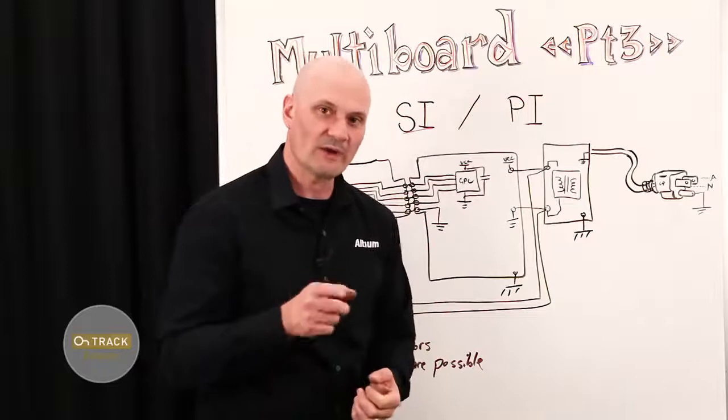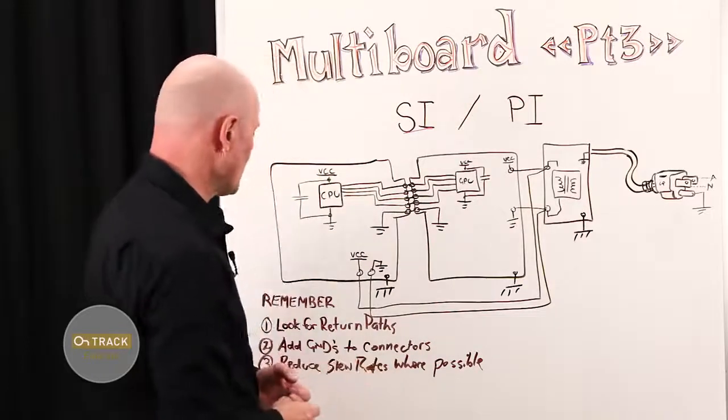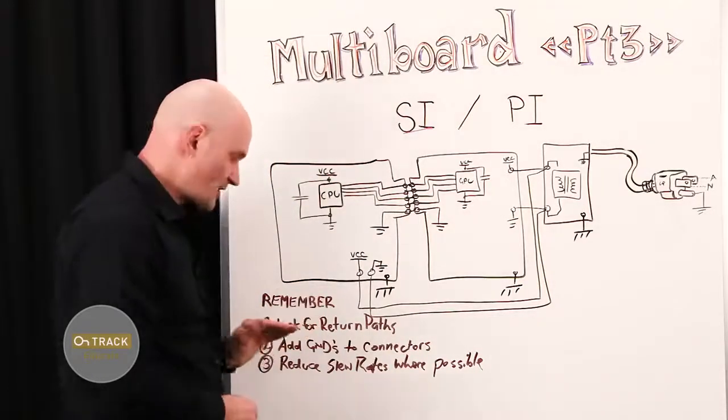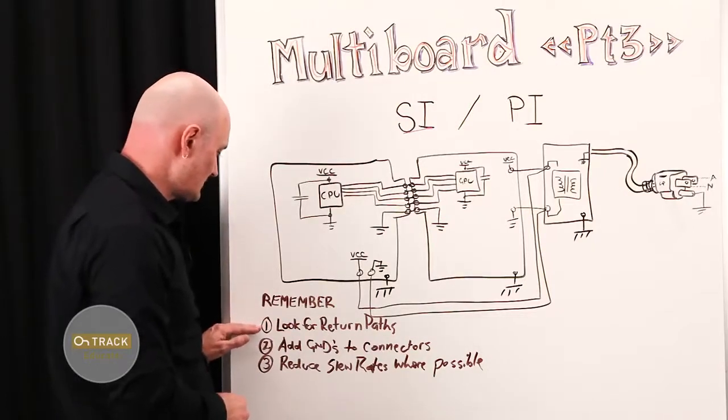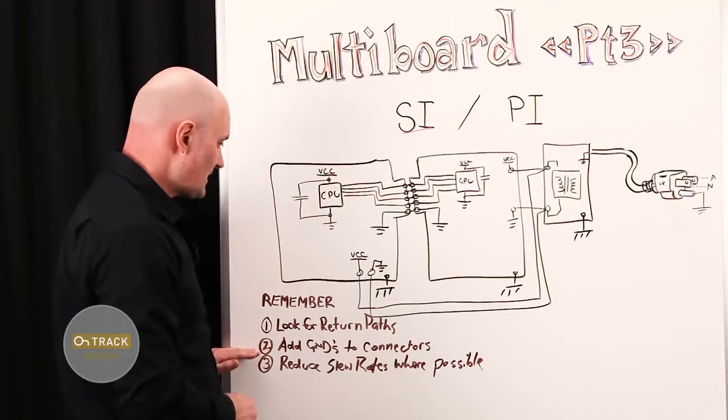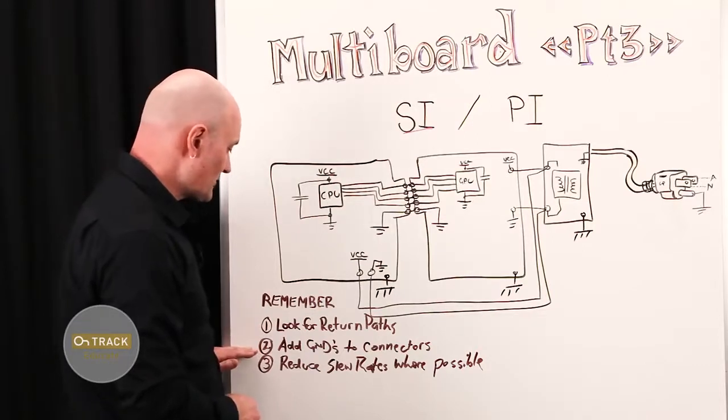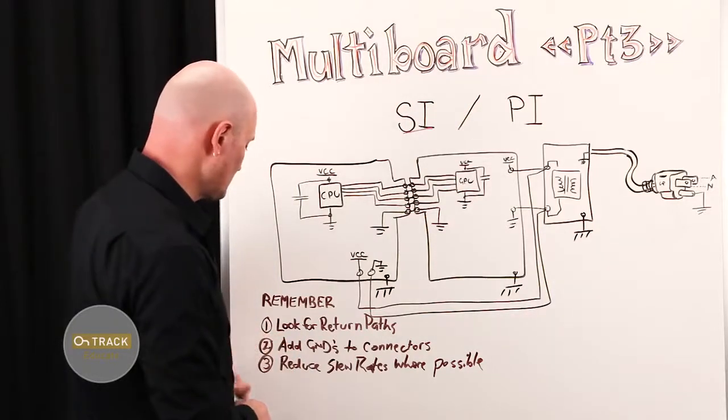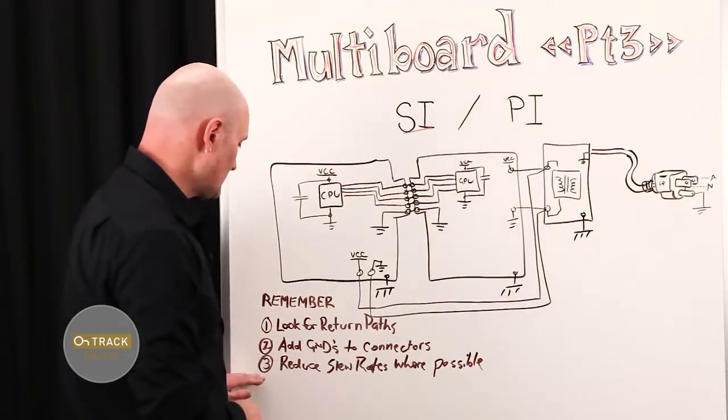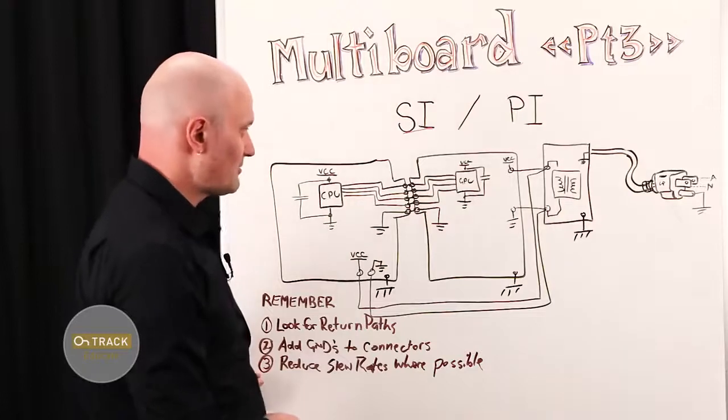So I want to talk about what are some of the common causes of those, but the essential points that we're going to look at today is how to look for return paths, and the second point I want to make is add more grounds than you think necessary to your board-to-board connections, and reduce slew rates where possible.